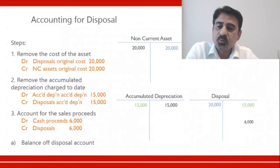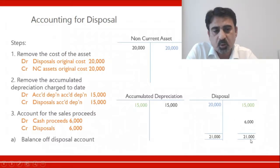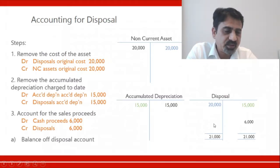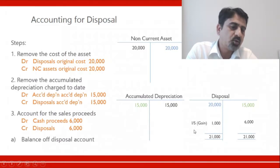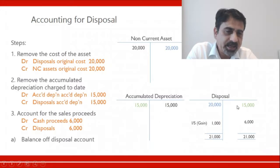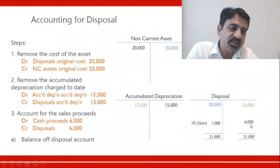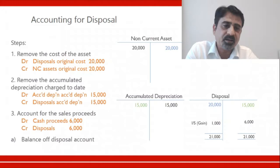The last step is to close the balance of the disposal account. We make both sides equal — whichever side is bigger, we write the total, which becomes 21,000. On the other side we have 21,000 but the figures only add up to 20,000 — there is a difference of 1,000. This 1,000 is a gain that goes to the income statement, because the asset had a net book value of only 5,000 (20,000 minus 15,000 accumulated depreciation) but was sold for 6,000. A 5,000 asset sold for 6,000 means you are making a profit — this 1,000 is called a gain.